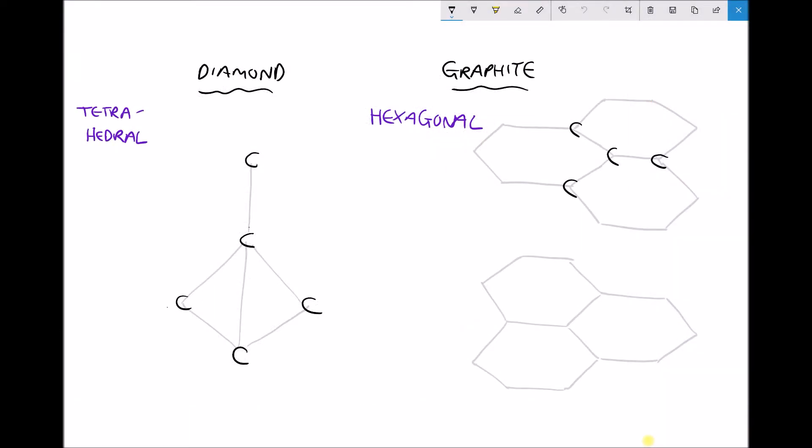So pictured on the screen here we have the structures of diamond and graphite. On the left hand side we have the structure of diamond which is a tetrahedral structure, and on the right we have the structure of graphite which is a hexagonal structure. Let's focus first of all on diamond and what we're going to focus on is the central atom here.